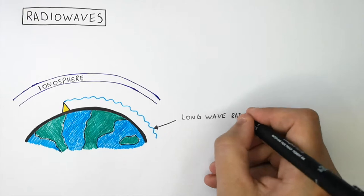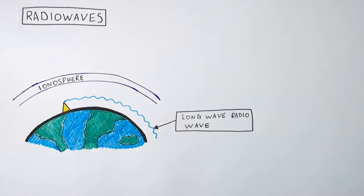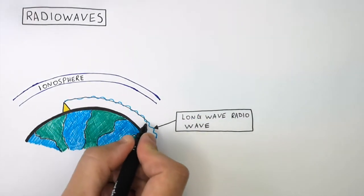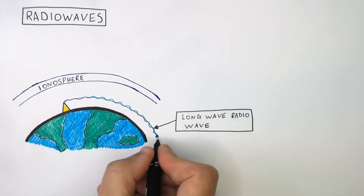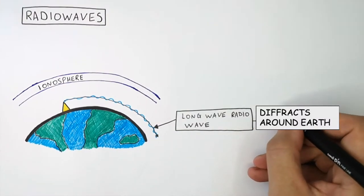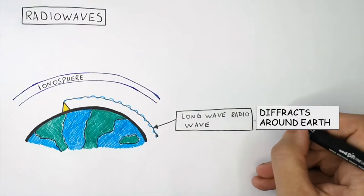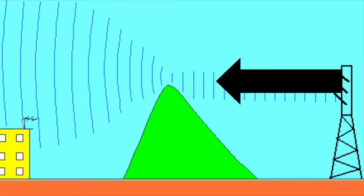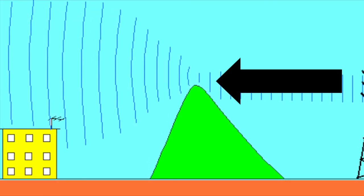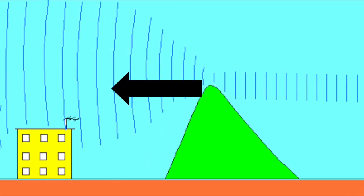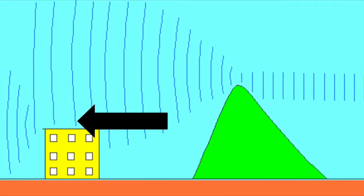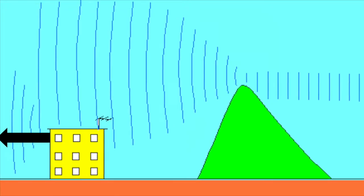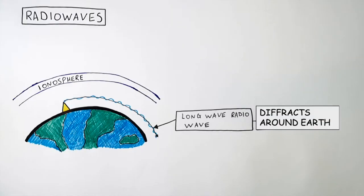Long wave radio waves are able to diffract around the Earth's curvature, and they can also diffract around mountains, buildings, and hills.